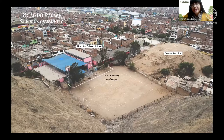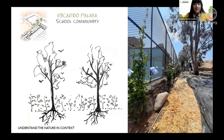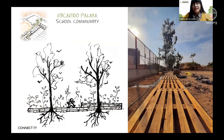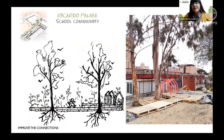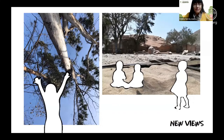For Ricardo Palma school, as you can see here, it's a very big space. What we did was identify the nature elements and understand the context — what can we do with the trees? We wanted to create a path to connect all the experiences and especially give children a real experience in other spaces. This is a view from a child's perspective, a small walk through nature that makes possible something really simple, like seeing the trees, which wasn't possible before because the place was very dirty.